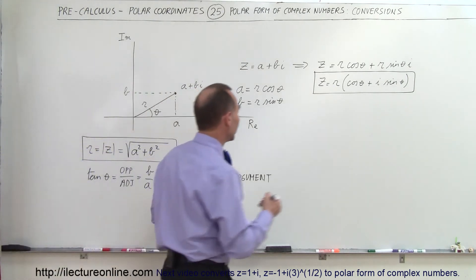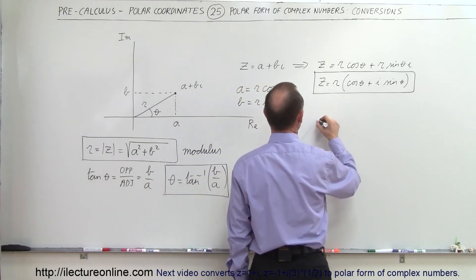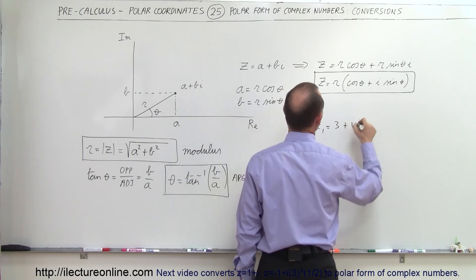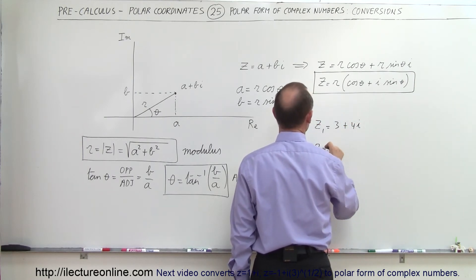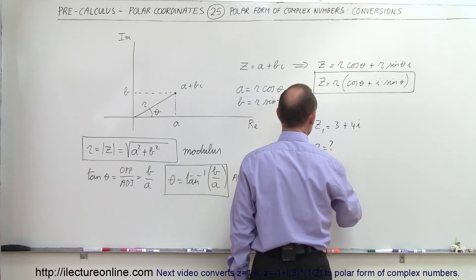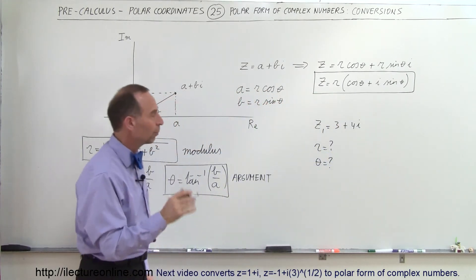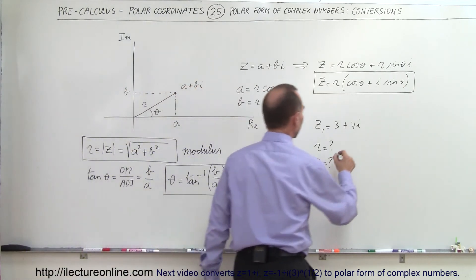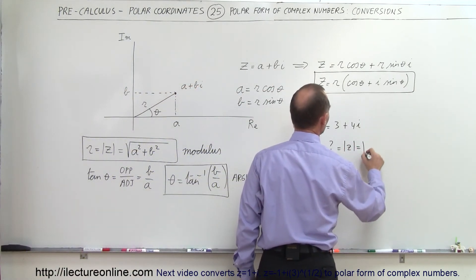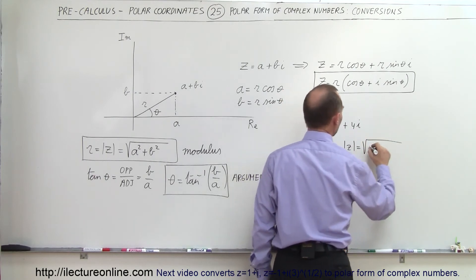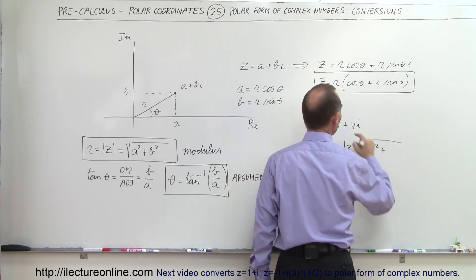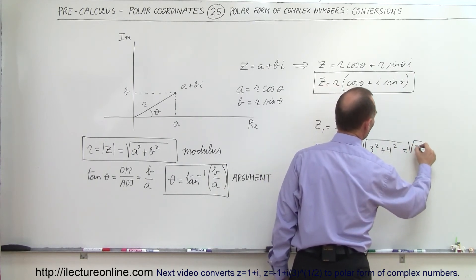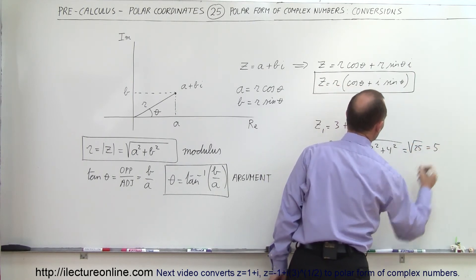Let's try an example. Let's say we have a complex number Z1 equal to 3 plus 4i, and we want to find the polar coordinates — what R and theta are. We know that R equals the absolute value of Z, which is the square root of the real part squared plus the imaginary part squared. That's the square root of 9 plus 16, which is the square root of 25, equal to 5.